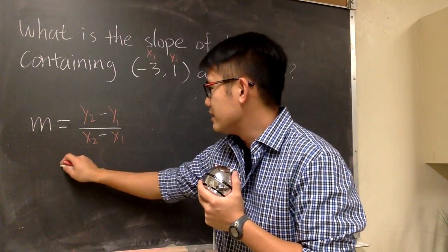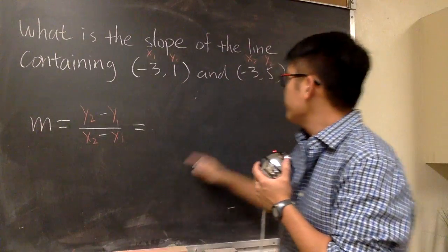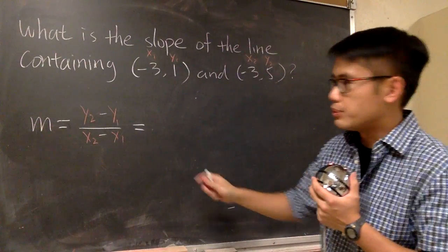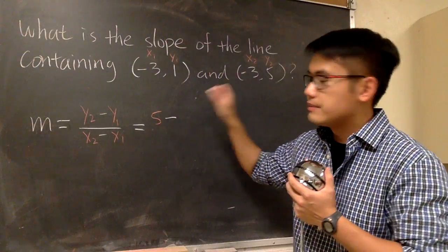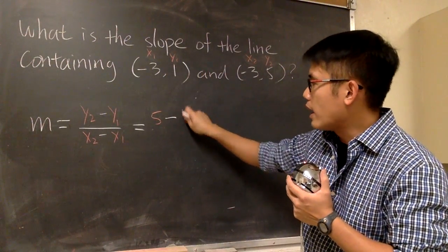So you will see this is going to give us, let me write it down here, y2 is 5. So I'll just put down 5 right here. And we are going to minus the y1 value, which is 1.